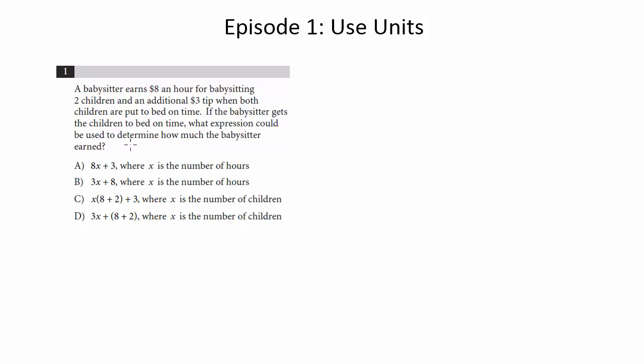We have these expressions, and we need to figure out which one best models the situation described here. The babysitter is going to earn $8 an hour for the two children, and looking at the choices we can see that probably x is going to be the number of hours, because if she's babysitting them for x hours, and she's earning $8 per hour, then she's going to want to multiply the number of hours times her hourly rate.